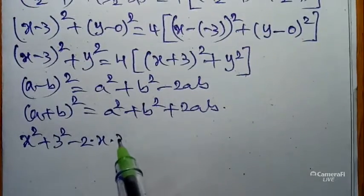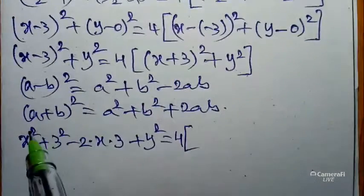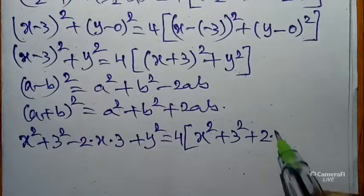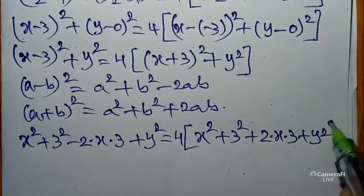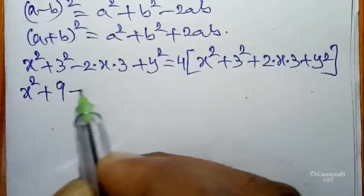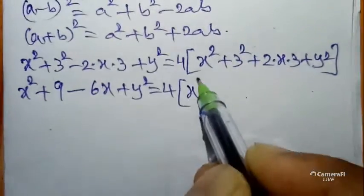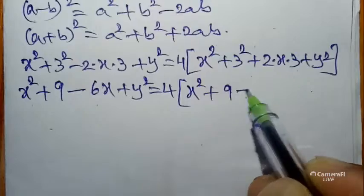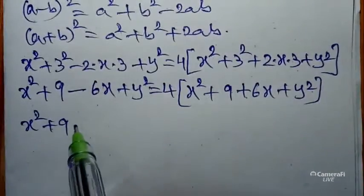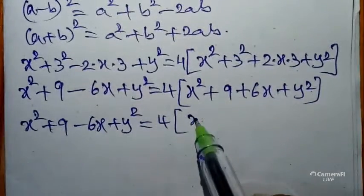Expanding the right side: x² + 6x + 9 gives 4·(x² + 9 + 6x) + 4y². So the equation becomes: x² - 6x + 9 + y² = 4x² + 36 + 24x + 4y².